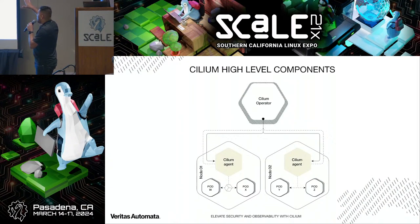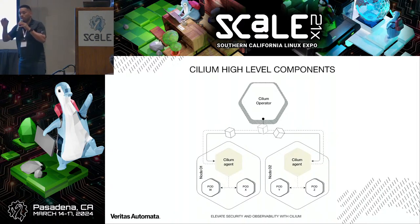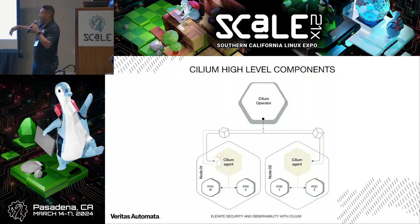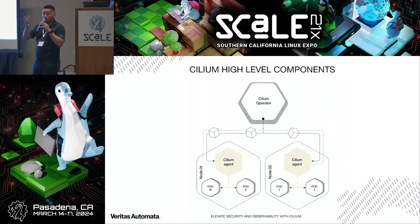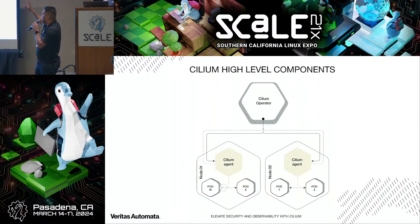By leveraging eBPF technology, Cilium provides efficient packet processing and scalability while ensuring robust network security and observability. It enhances Kubernetes networking capabilities, enabling seamless communication between microservices while enforcing security policies at scale. Architecturally, Cilium uses the operator pattern — the operator manages all concepts and communicates with all nodes. Using a DaemonSet approach, Cilium installs an agent on every node. If you have 10 nodes, you have 10 agents. The operator manages their lifecycle, communicating via key-value store similar to etcd.